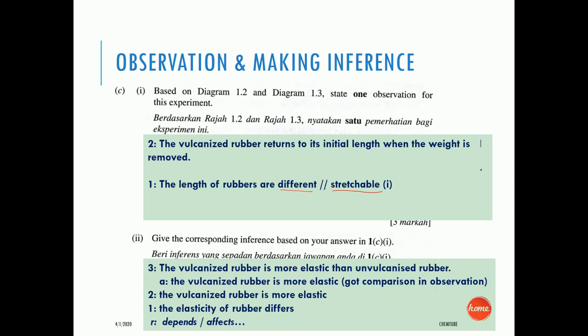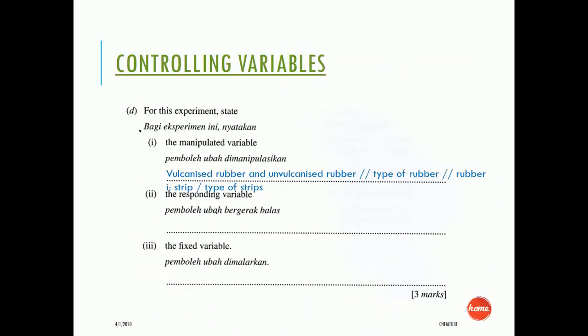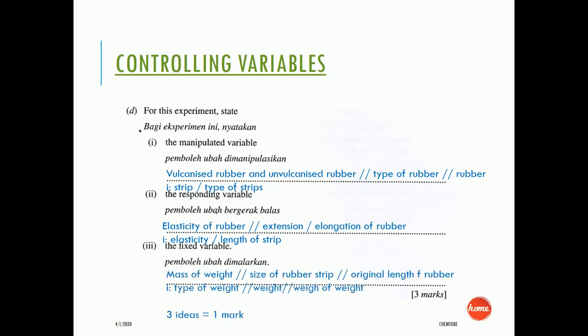For controlling the variables: the manipulated variable is the type of rubber — vulcanized rubber and unvulcanized rubber (idea mark: type of strip). The responding variable is the elasticity of the rubber, extension, or elongation of rubber (idea mark: elasticity or length of strip). The fixed variables are the mass of the weight, size of the rubber strip, and original length of the rubber (idea mark: type of weight or weight of weight). Writing three idea marks equals one mark.